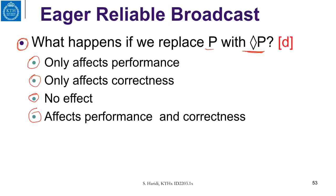If you remember the proof of Lazy Reliable Broadcast, we only used in that proof the completeness property of P and not the accuracy. But the completeness property of P is also shared with ◇P — ◇P has the same completeness property. Thus, as the proof goes, if we use ◇P, the algorithm is still correct. So we can say that correctness of the algorithm is not affected.